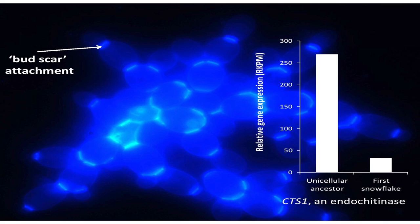This is a snowflake yeast cluster stained with a blue cell wall fluorescent stain. You can see this isn't just a jumble of cells — these cells are attaching to each other via a very specific geometry. Daughter cells remain attached to their mother cells after mitosis; there's no random stickiness. When we look at gene expression between our unicellular ancestor and our first snowflake yeast, the single largest difference out of thousands was a knockdown in CTS1, which is an endochitinase required for daughter cell separation after mitosis.